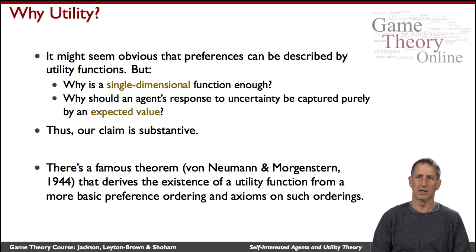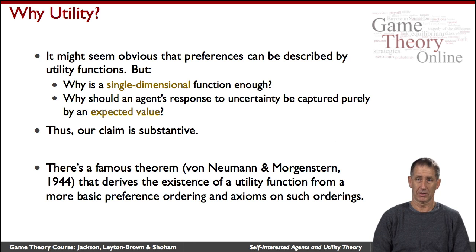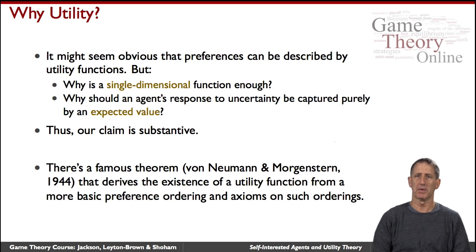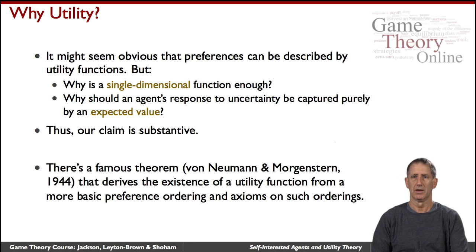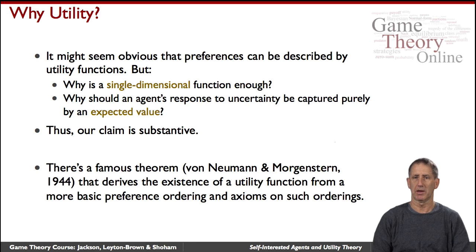Maybe the most famous reference is Von Neumann and Morgenstern's seminal book, which is, in some ways, the introduction to modern-day game theory. It derives these utility functions from more basic assumptions one makes. We won't go into that, but we just wanted to flag this issue as something that underlies everything we say about game theory, and which really underlies modern game theory.